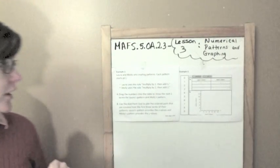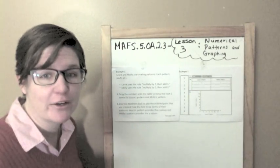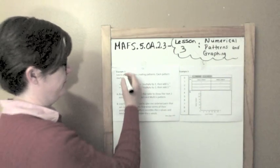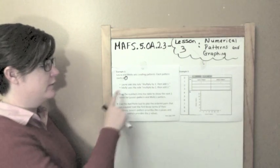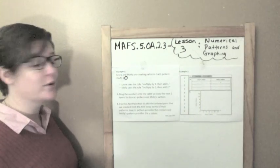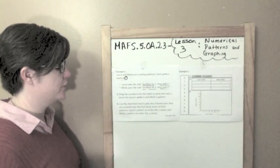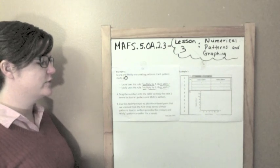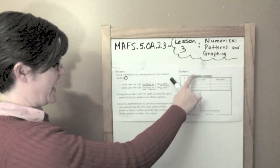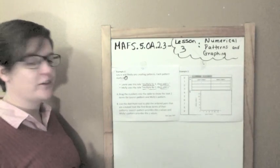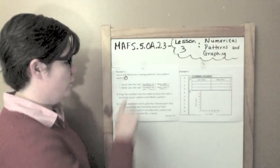Example 2. Laura and Molly — some other friends of mine that I work with. Laura and Molly are creating patterns. Each pattern starts at 1. Laura uses the rule multiply by 2 then add 1. Molly uses the rule multiply by 2 then add 2. There are two parts to this question. Part A says to drag the numbers into the table to show the next two terms for Laura's pattern and for Molly's pattern. Part B says to use the add point tool to plot the ordered pairs created from the first three terms of their patterns. So let me first figure out their patterns.